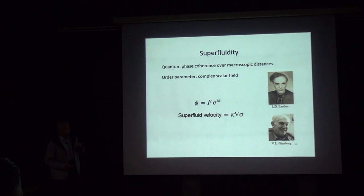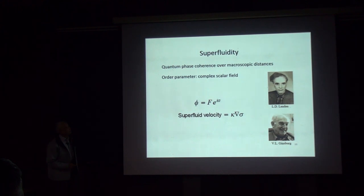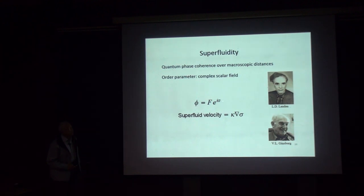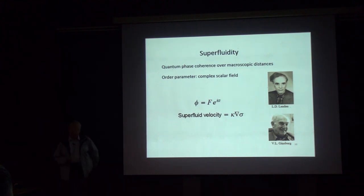Superfluidity is a quantum effect — a manifestation of quantum phase coherence over macroscopic distances. You can describe it with an order parameter introduced by Landau and Ginzburg: a complex field that is defined everywhere but has a quantum phase, whose gradient represents the superfluid velocity. They designed this theory in 1950 to explain superconductivity, but this model can describe any quantum phase coherence and is a generic model for superfluidity.